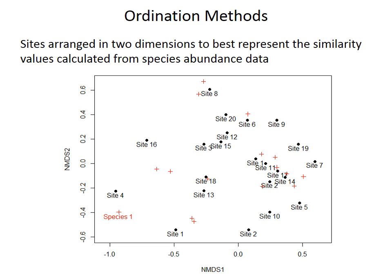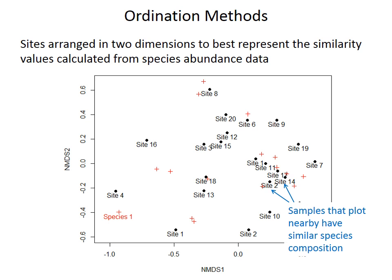This technique is an example of ordination. The key thing when looking at these plots, as you'll do with the data for the project, is that samples that plot near each other — such as Site 2 and Site 14, or Site 12 and Site 15 — plot close to each other because they have similar species compositions. They tend to contain the same species as abundant and as rare. In contrast, Site 4 on the far left and Site 7 on the far right plot far apart, and so are very different from each other — they don't contain the same species.